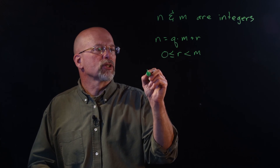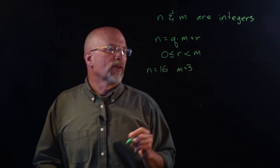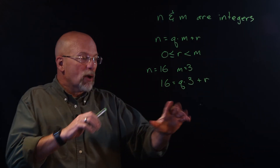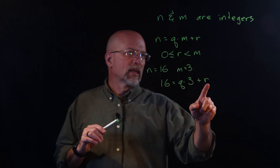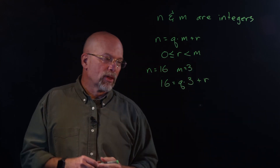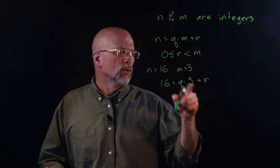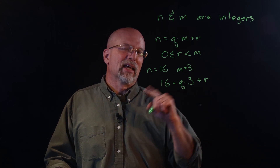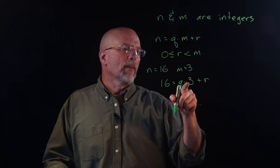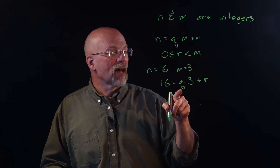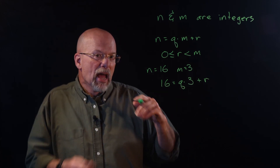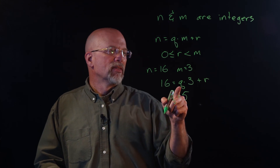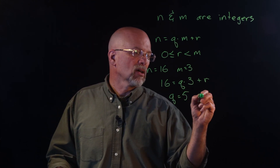Let's do some examples to get a feel for what we're looking at. If n is equal to 16 and m is equal to 3, then 16 equals q times 3 plus r. Remember, the key to there being unique values for q and r relies on r being less than m but greater than or equal to zero. If q equals 5, then we have 15, and 15 plus 1 equals 16, so r is equal to 1.